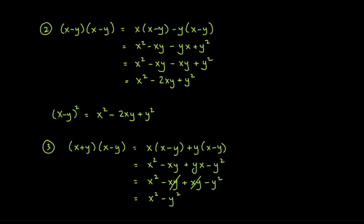Multiplying out: x times x gives x², x times −y gives −xy, −y times x gives −yx, and −y times −y gives +y². Since −yx equals −xy, these two are like terms and combine to give −2xy. The final result is x² − 2xy + y².